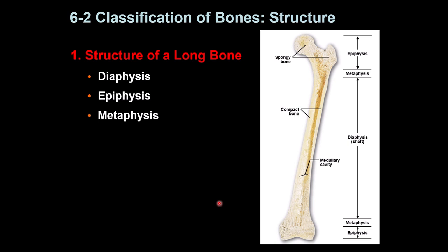Classification of bone based on structure: we will discuss long bones and flat bones, as these are the two most common bones in the body. Irregular bones are also common but do not have specific physical features, so they won't be discussed here. Long bones have three different parts. The long middle area is called the diaphysis or shaft. The two ends are called the epiphysis, and in between the epiphysis and diaphysis is an area called the metaphysis.